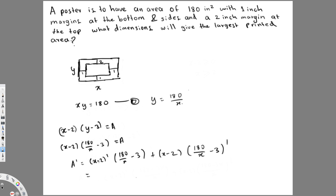The derivative of (x − 2) is just 1. For the derivative of (180/x − 3), using the power rule, 180/x = 180x⁻¹, so its derivative is −180/x². This gives A' = 1·(180/x − 3) + (x − 2)·(−180/x²), which simplifies to (180/x − 3) − 180(x − 2)/x².